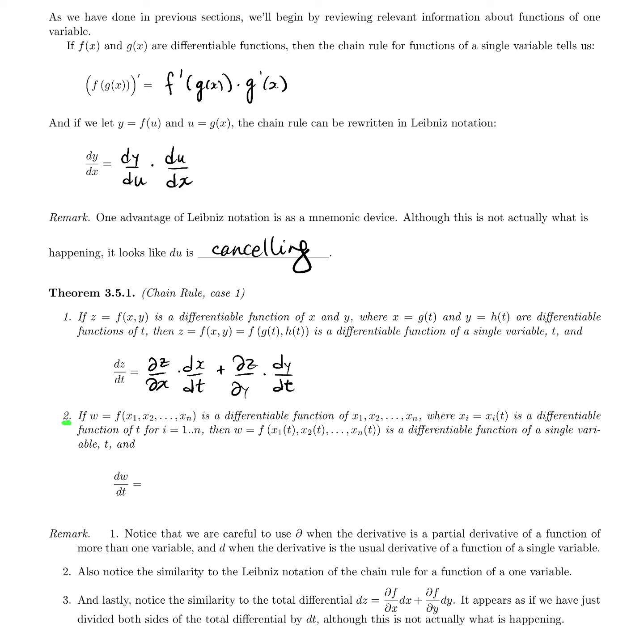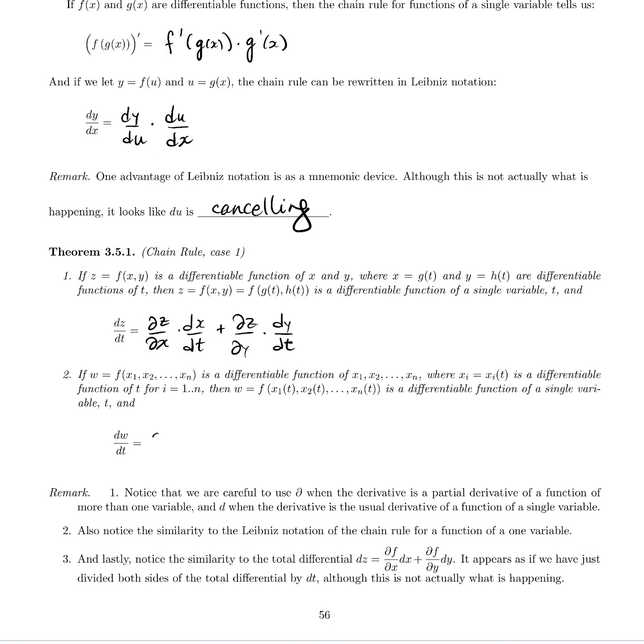Second part, a more general case. If w is a function of n variables, x1 through xn, and it's differentiable, and each xi is xi of t, a differentiable function of t for i equals 1 to n, then w is a function of t and it will be differentiable. And dw/dt is a generalized version: del w/del x1 times dx1/dt plus all the way up to del w/del xn times dxn/dt, which can be written in sigma notation as the sum from i equals 1 to n of del w/del xi times dxi/dt.